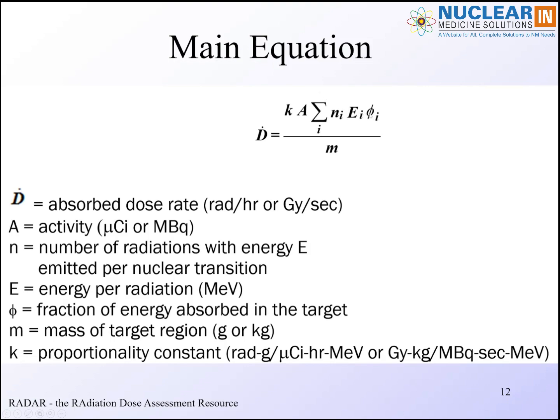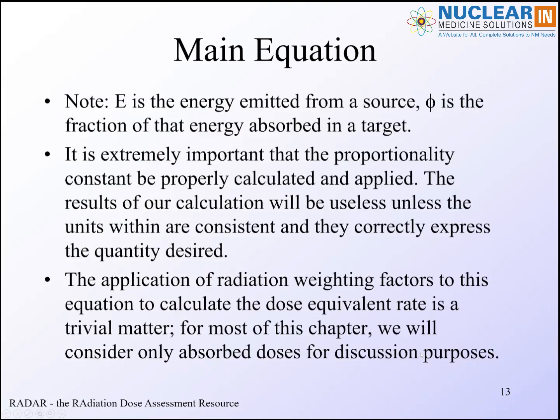So energy emitted, energy absorbed per unit mass, we're done. Except we've got to get our units right. So there's this factor k that gives you the conversion factor between, if you have for instance energy, and I'm going to speak in SI units as much as possible, activity in megabecquerels, mass in kilograms, energy in MeV. This will convert all those units into gray, and we'll see an example here in a second. So E is the energy emitted from a source. That factor φ is the fraction of energy absorbed in any target. The source of course will be a target, but other targets will be out there.